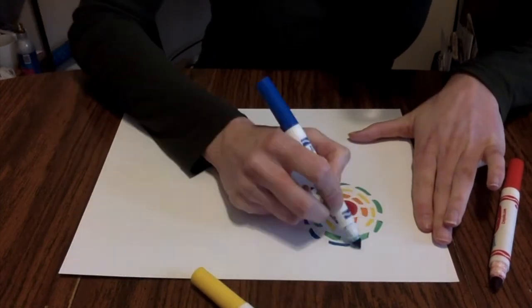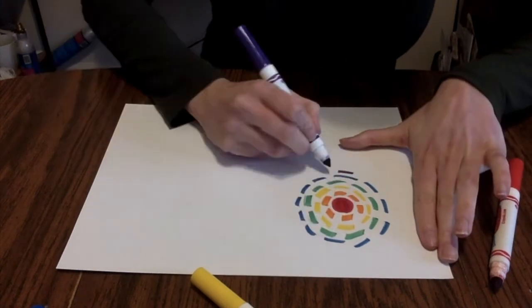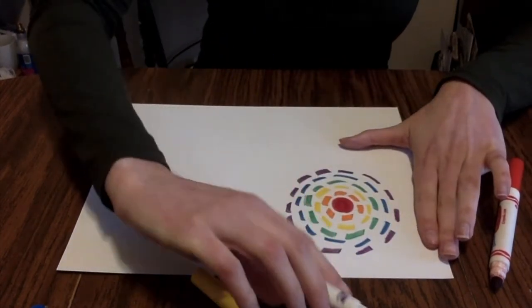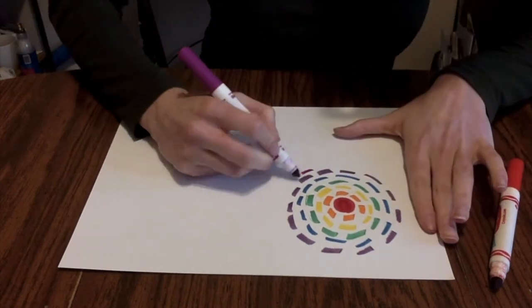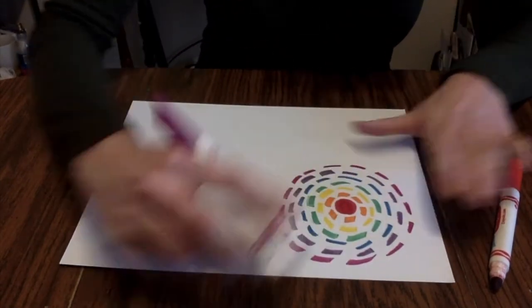As we draw our concentric circle it's going to grow outward. Make sure that the lines you draw are not too far from each other but not too close. We want a lot of the white of the page to be covered but not quite all of it.